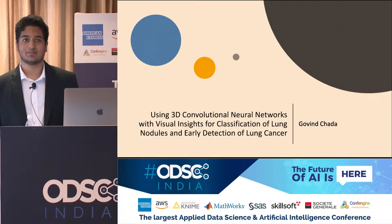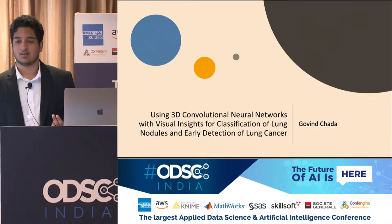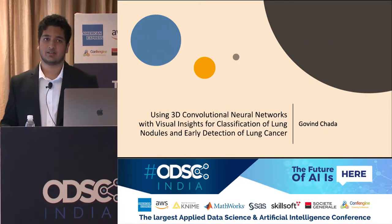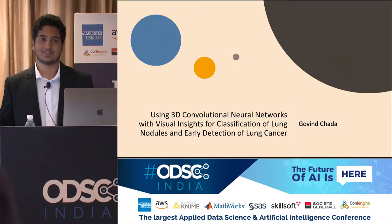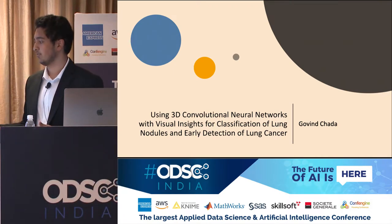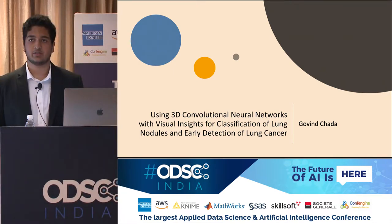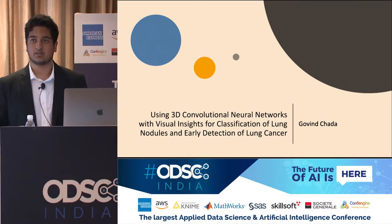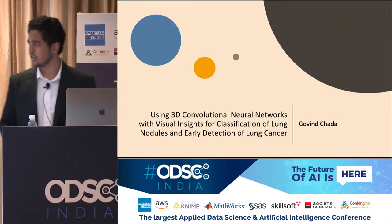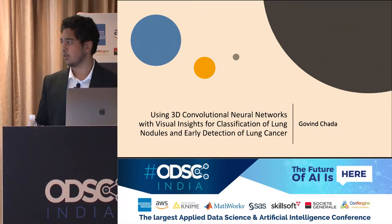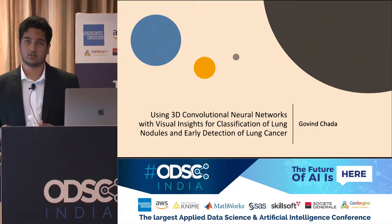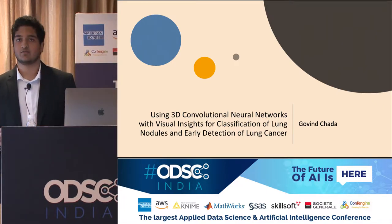Hi, everyone. My name is Govin. I'm going to be in 12th grade next year, and I'm from Houston, Texas. Currently I'm working in a learning algorithms lab at the University of Houston. This is my case study on using 3D convolutional neural networks with visual insights for classification of lung nodules and early detection of lung cancer.